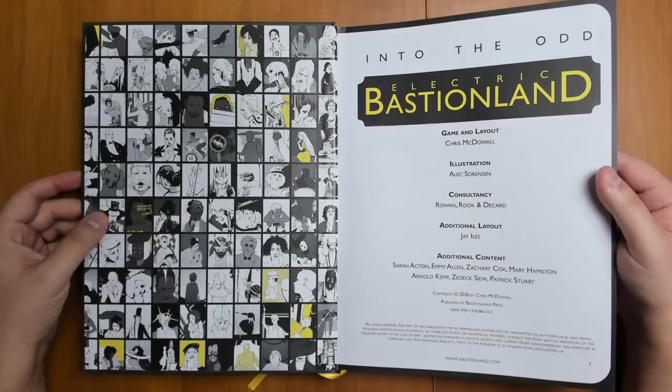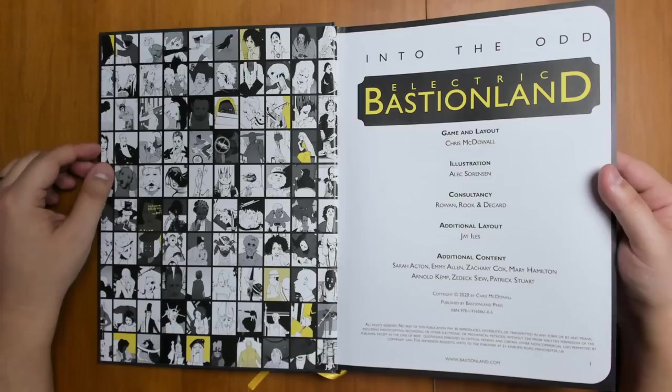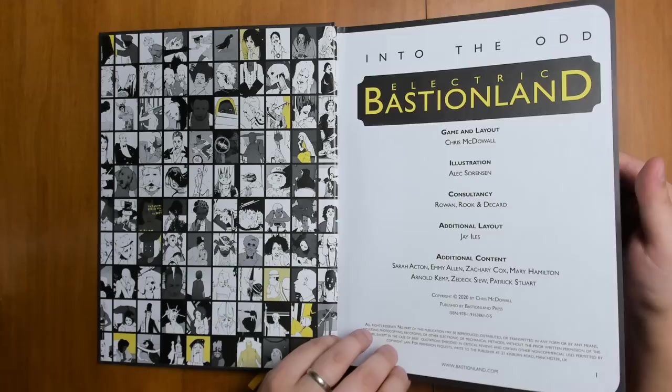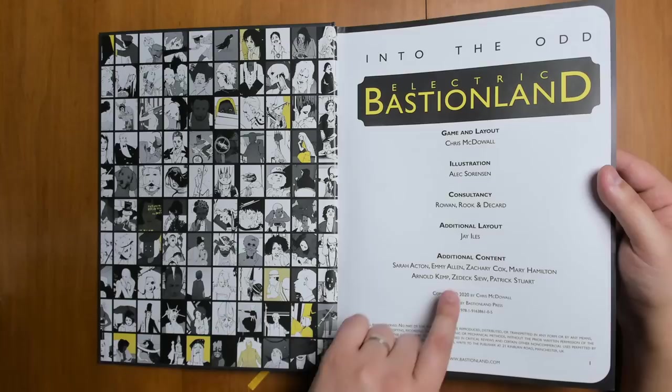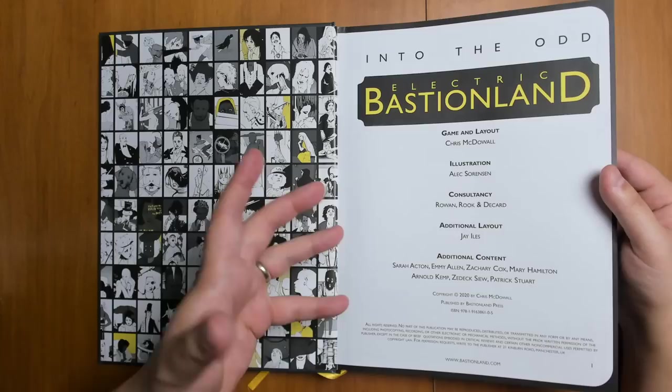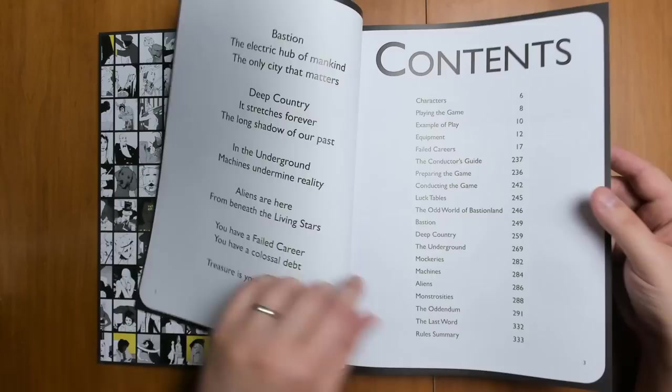So it's a very nice, well-produced hardcover book here. Game and layout done by Chris McDowell. All the illustration is done by Alex Sorenson. And we have some of our other credits here. There's a bunch of guest writers, including people like Emmy Allen, Arnold Kemp, ZXU, Patrick Stewart, Zachary Cox. Some other people you may recognize from other OSR books.